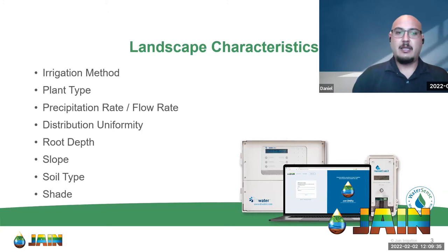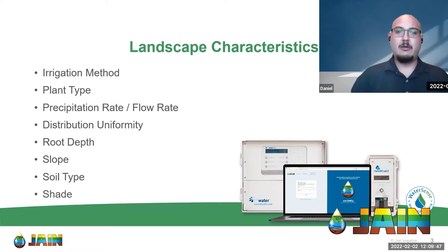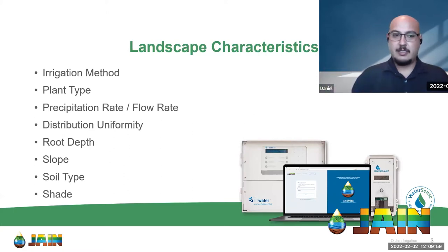Precipitation rate and flow rate are determined by our irrigation method, along with distribution uniformity — which tells us how we may need to cycle the watering, doing a couple of short waterings throughout the day or through our water window instead of one long watering. Root depth helps us determine how far down we need to water, and by calculating how fast we're putting water down, we can calculate how long it takes to reach the bottom of that root depth.